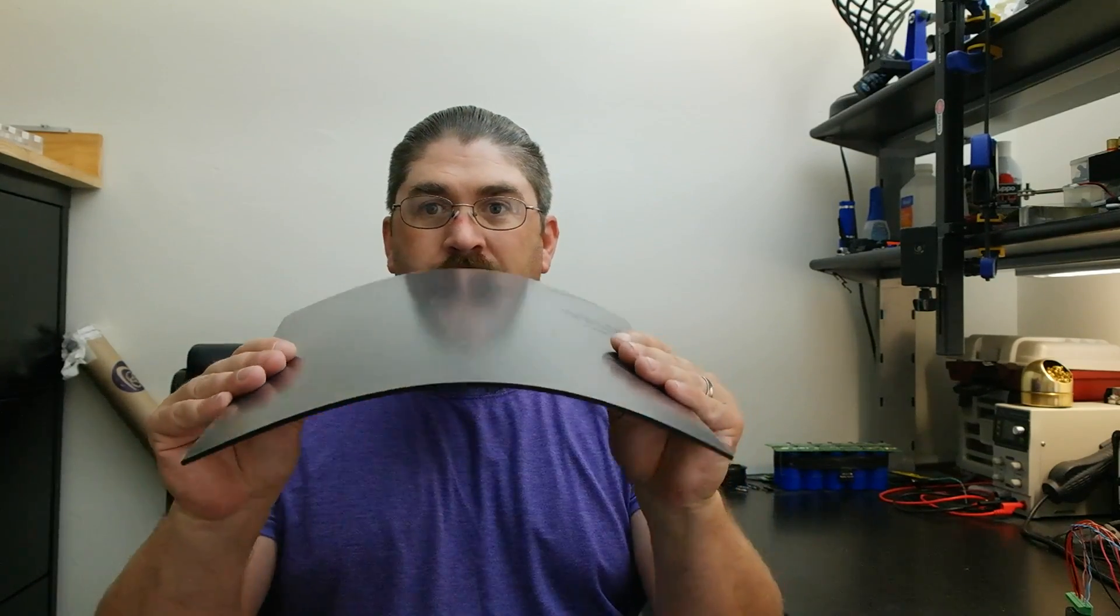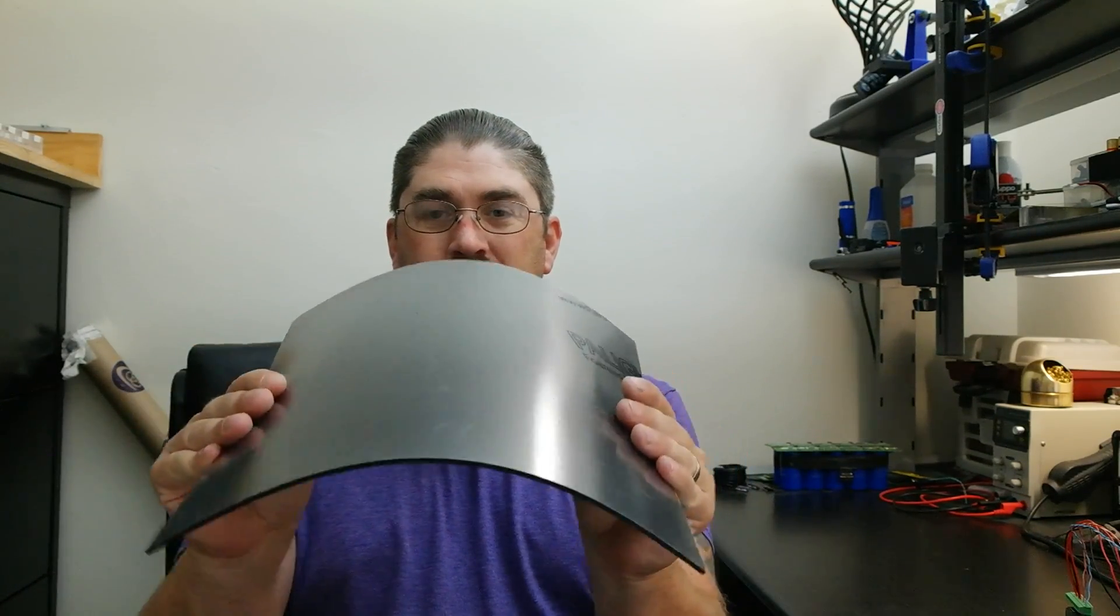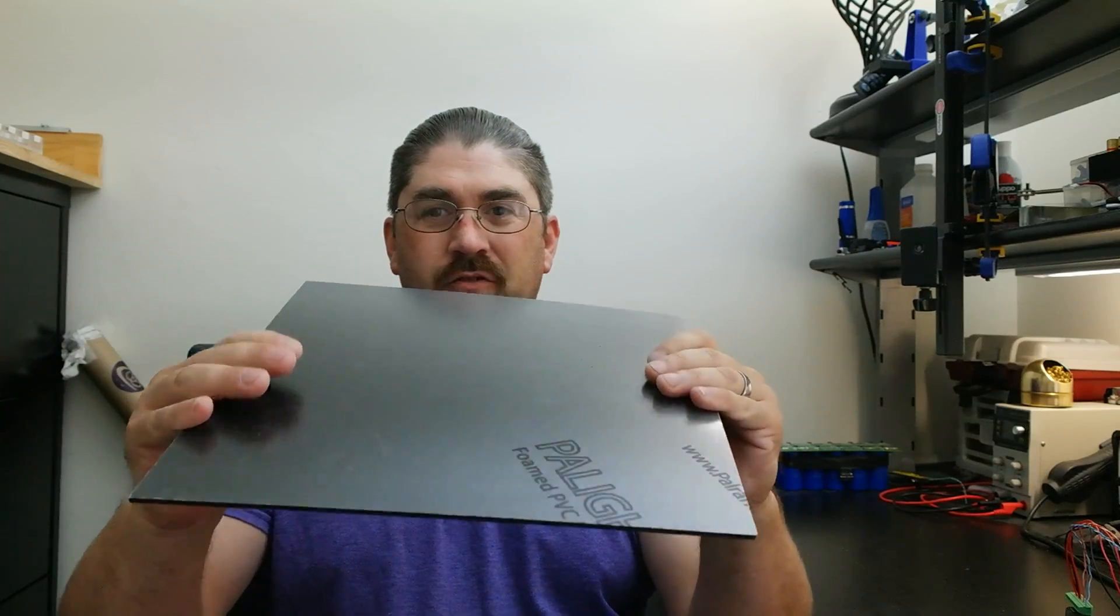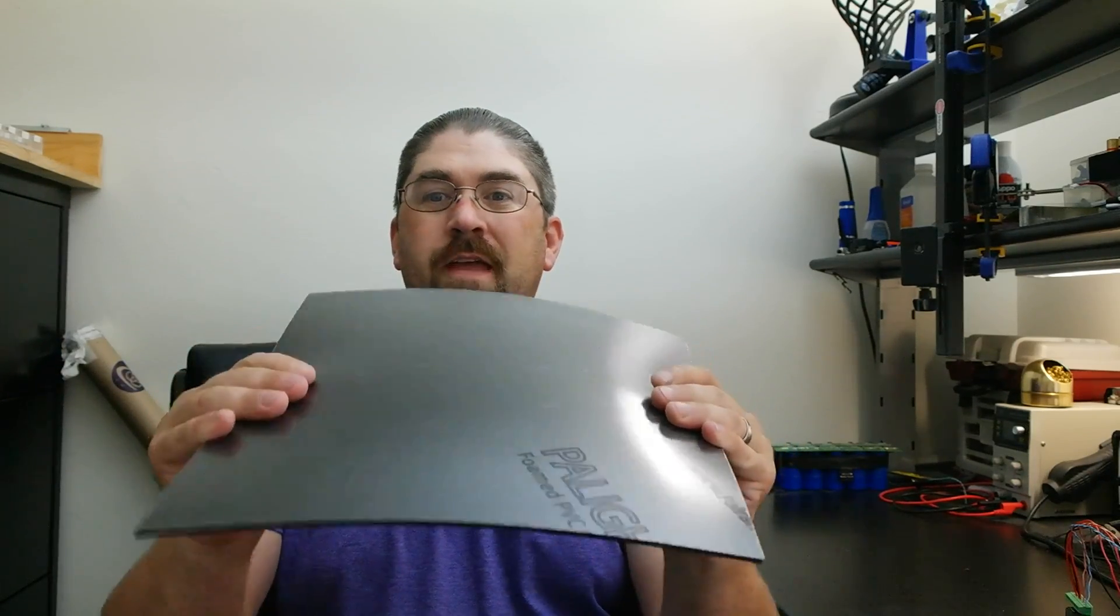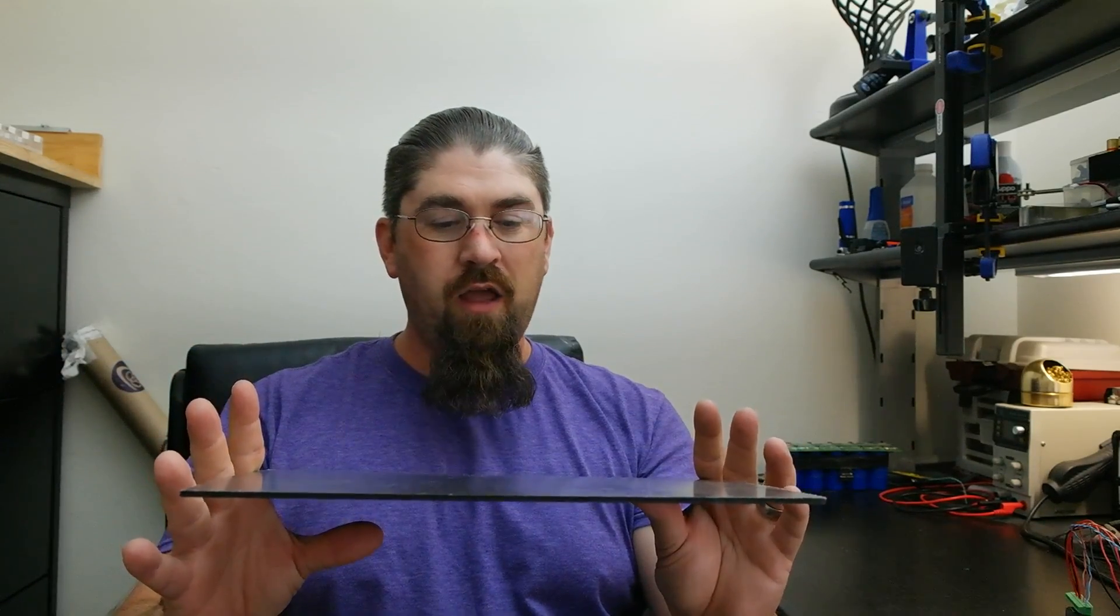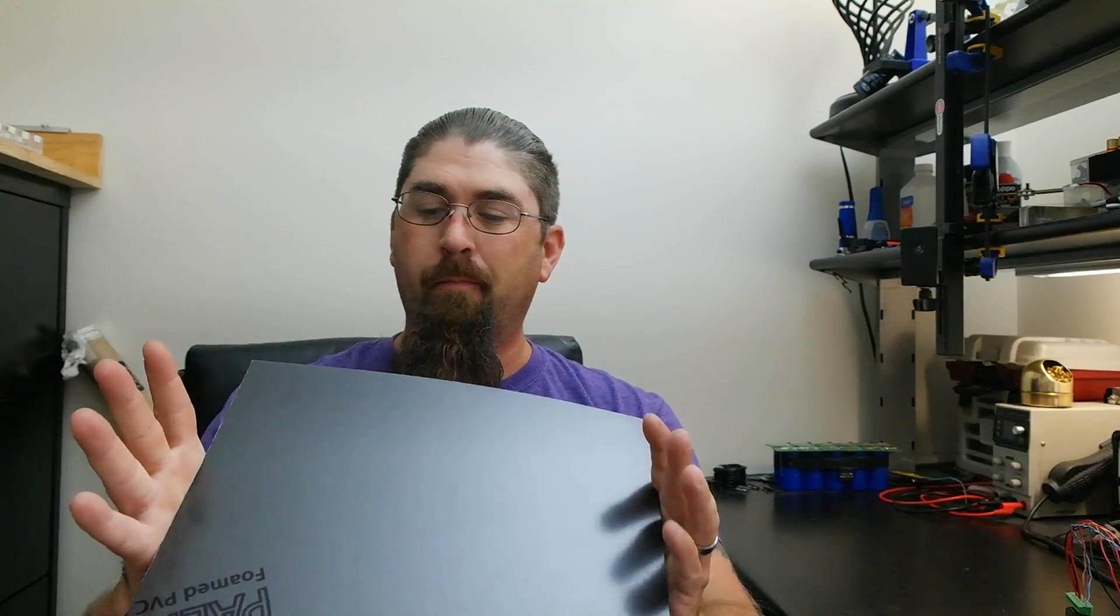But apparently this board, even though it's plastic, actually has a grain to it. You can't see it but it flexes really nice one direction. It doesn't really like to flex the other direction, so I'll have to keep that in mind when I go to heat form this.